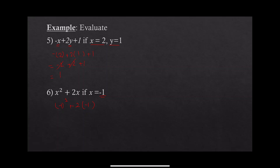Negative 1 raised to an even power is positive, so negative 1 squared equals 1. Then positive 2 times negative 1 — positive times negative is negative — gives negative 2. 2 times 1 is 2. So 1 minus 2 equals negative 1.